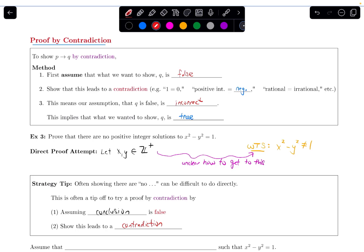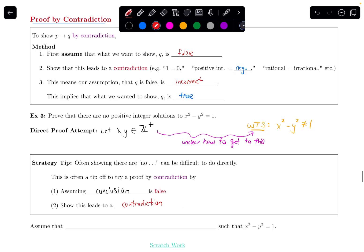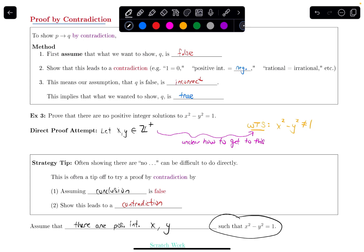So in our example, if I'm trying to prove that there are no positive integer solutions to that equation, I'm going to assume the opposite. I'm going to assume that there are positive integers x and y such that x squared minus y squared equals one. We are assuming the opposite of what we wanted to show, to try to get a contradiction.